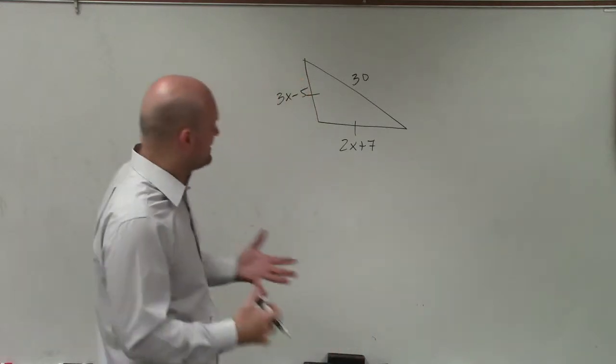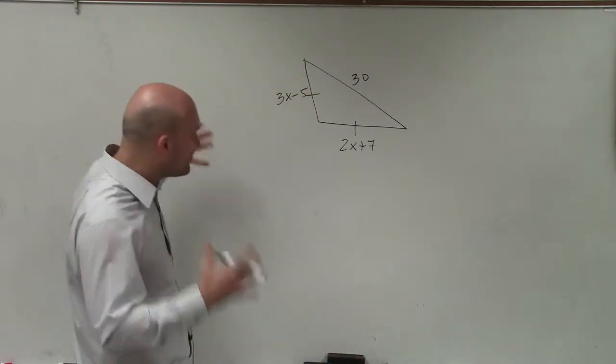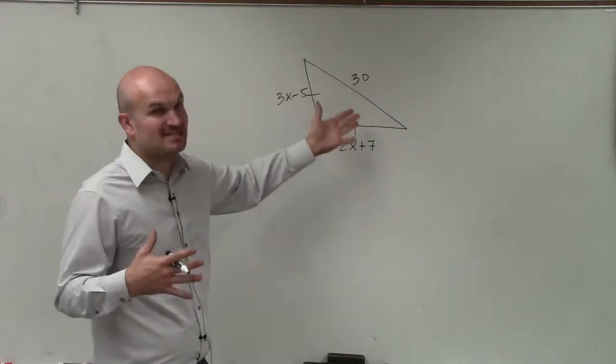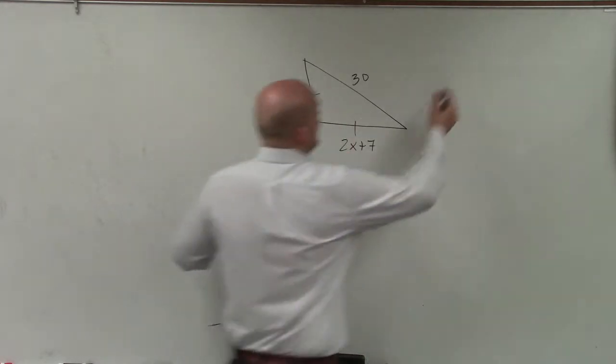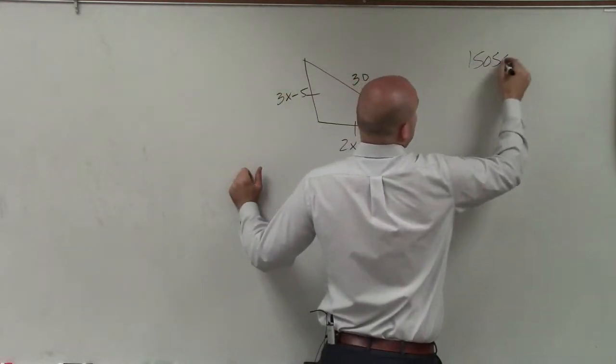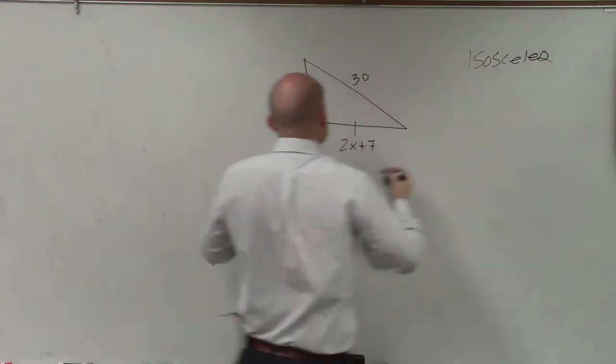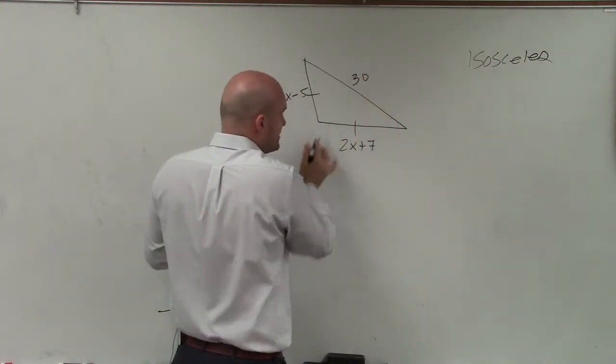One thing I look at in this chapter is how can I relate this? Well, I see these two tick marks, which means I know two sides are equal. Therefore, I know that this is an isosceles triangle. And remember, in an isosceles triangle, these two sides are congruent.